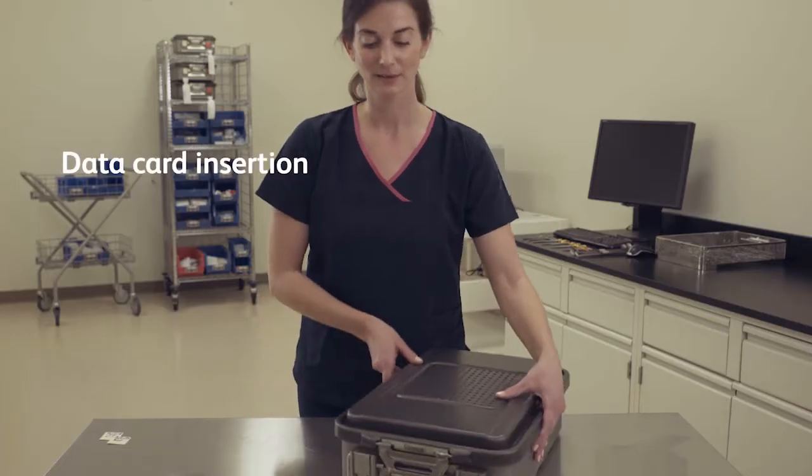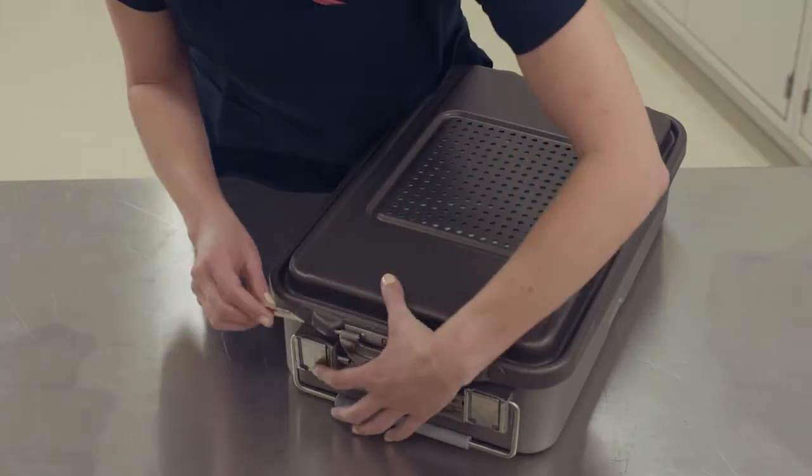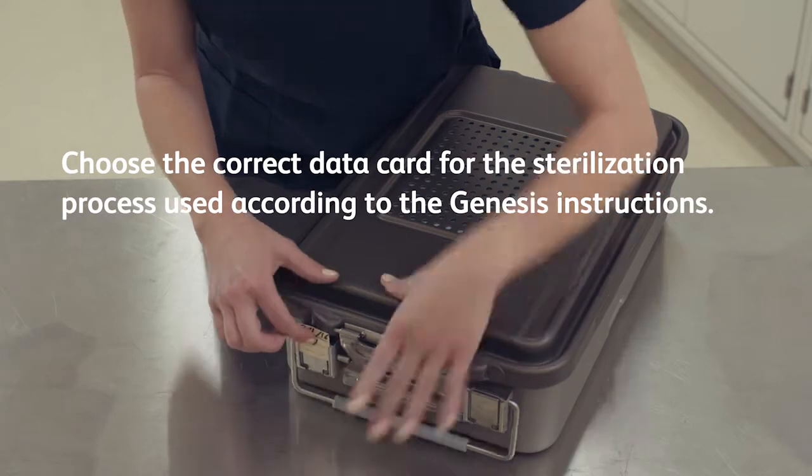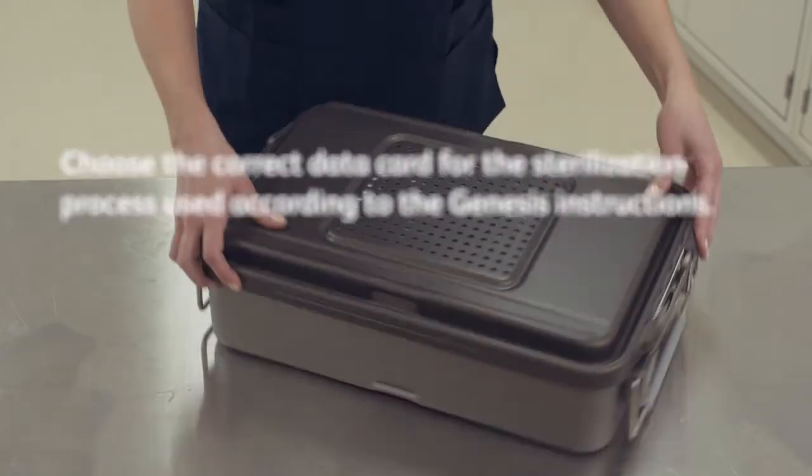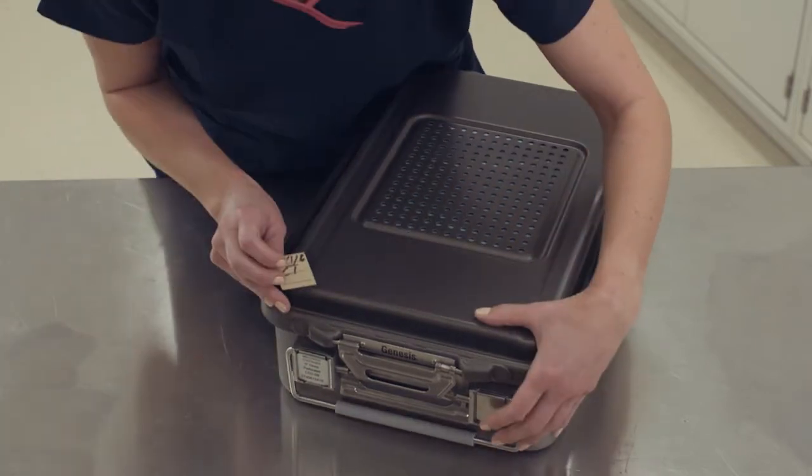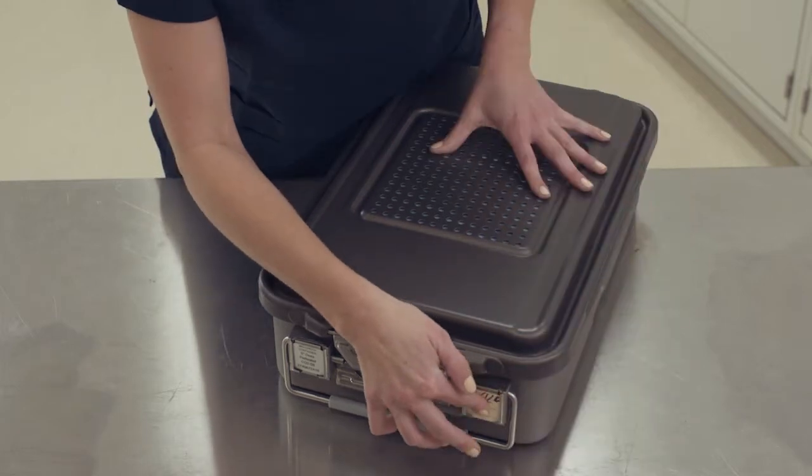Data cards are used to record processing information such as load number, date processed and expiry date, according to your facility's protocols. Insert the data cards into the blocks located on each side of the container bottom. Placement will allow for easy visual access during storage and transport.